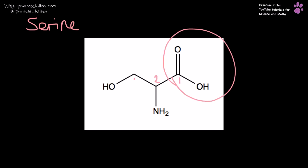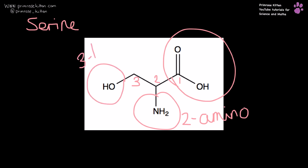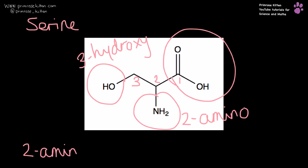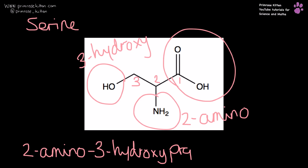Here is our carboxylic acid group — one, two, three — that is a 2-amino and a 3-hydroxy, giving us 2-amino-3-hydroxypropanoic acid.